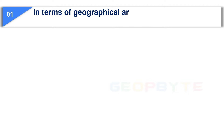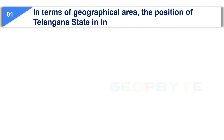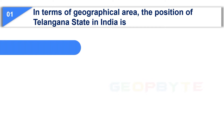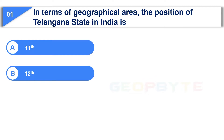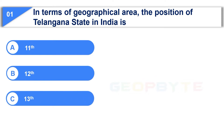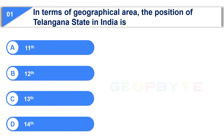The first question is: in terms of geographical area, the position of Telangana state in India is — Option A: 11th, Option B: 12th, Option C: 13th, Option D: 14th.